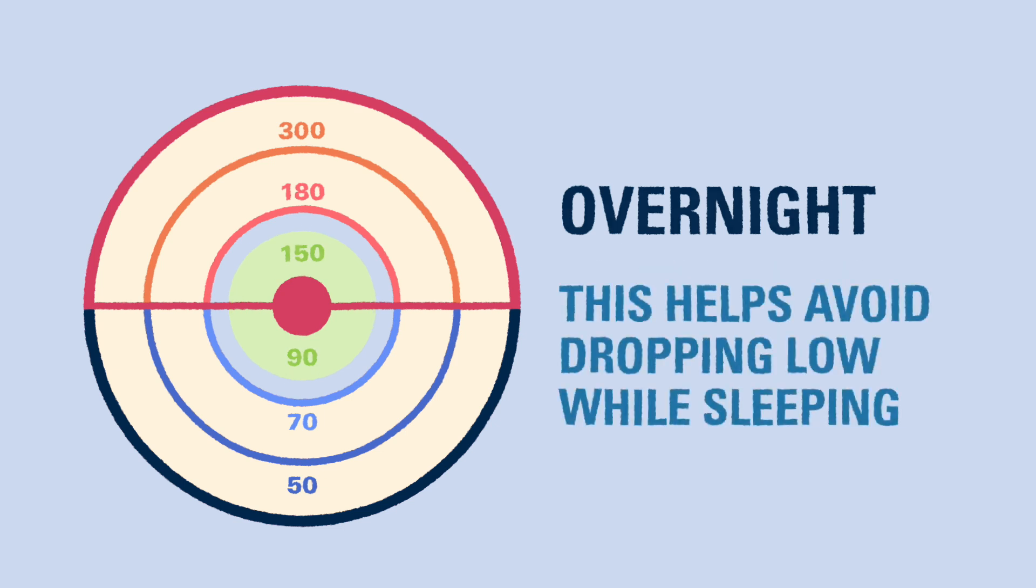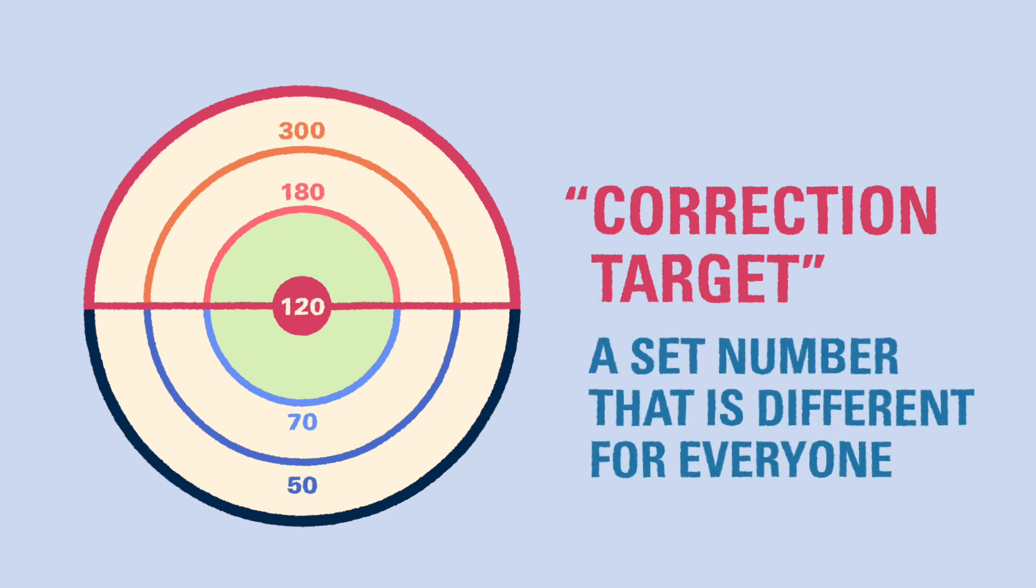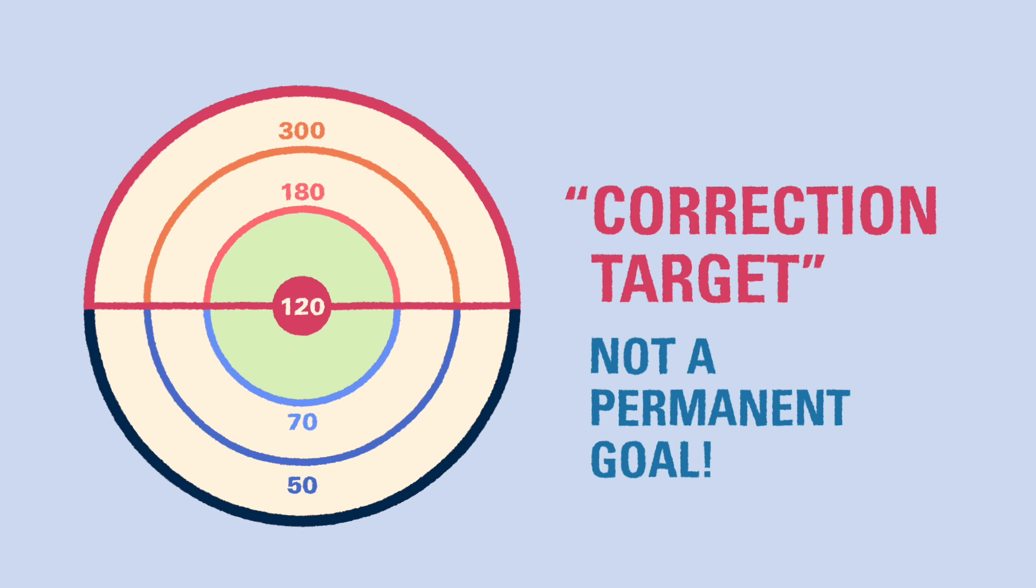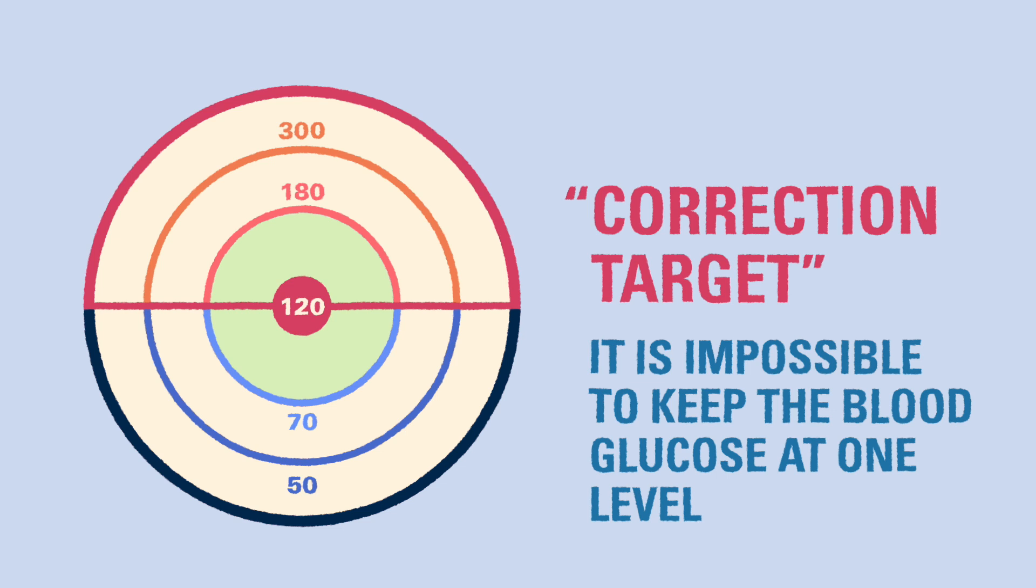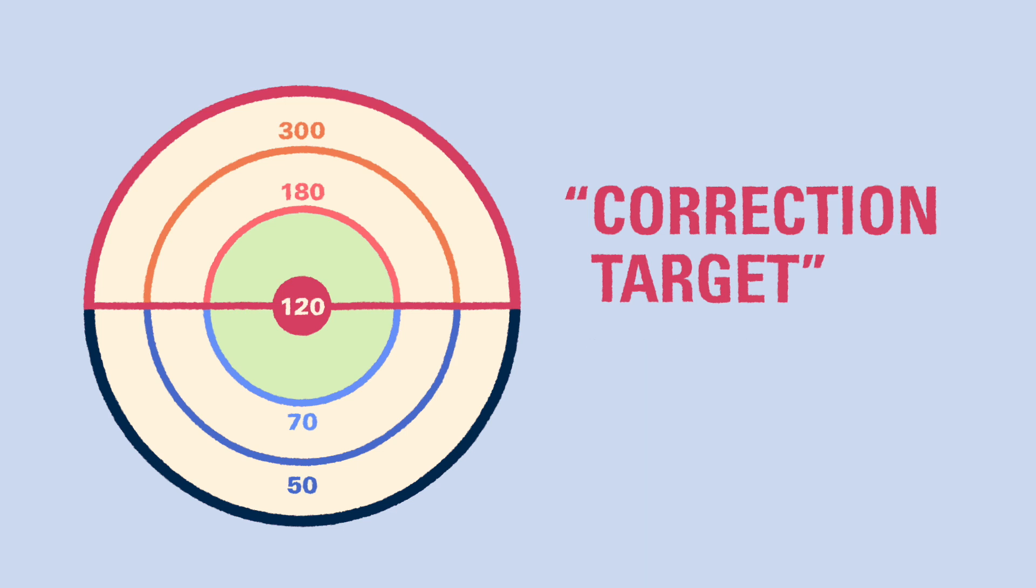The diabetes team will help you determine a fixed blood glucose number called a correction target, like 120, unique to each child that you can use whenever you need to give a correction dose of insulin to treat a high blood glucose. The name is a little tricky. The correction target isn't meant to be a goal. It's only used for insulin math. It's impossible to keep the blood glucose at this exact level all the time, which is understandable considering how many things can affect blood glucose. The correction target for calculations is a little different for every person with diabetes, and it may change over time. We'll show you how to use the correction target later in this series.